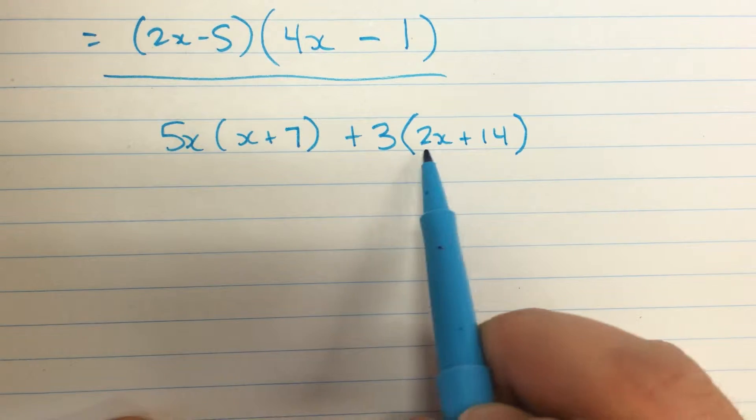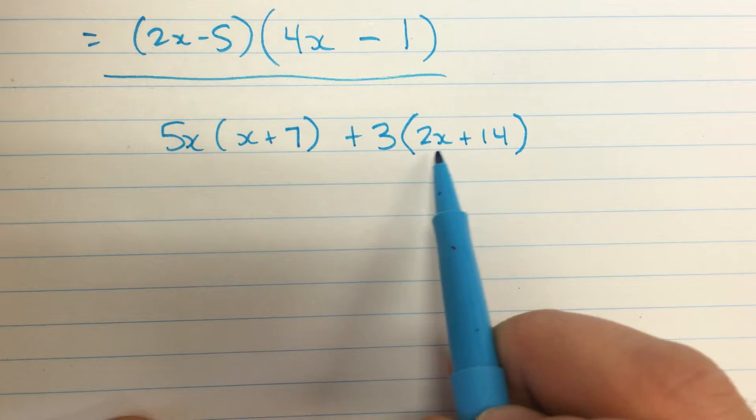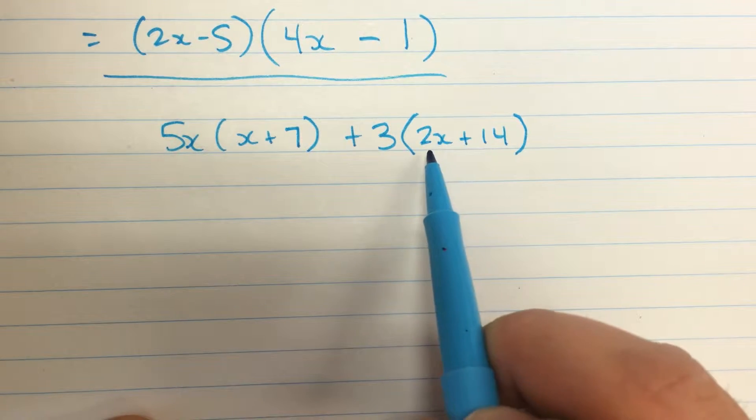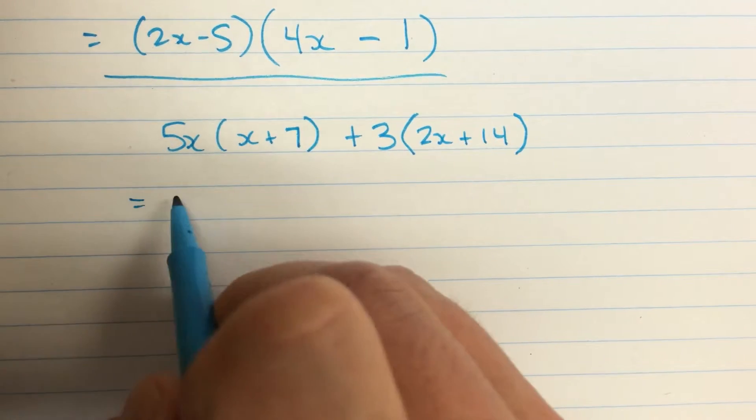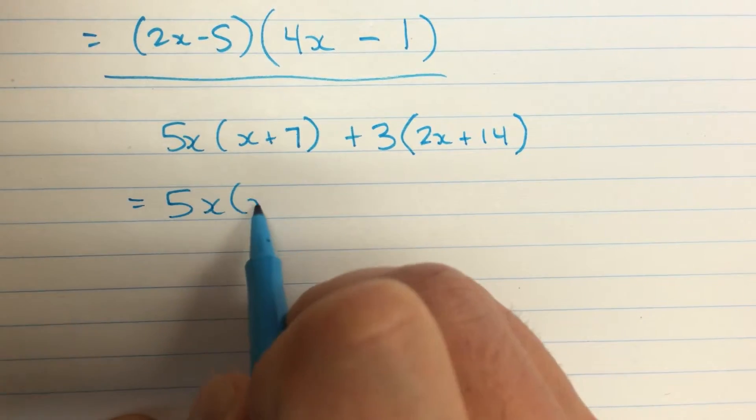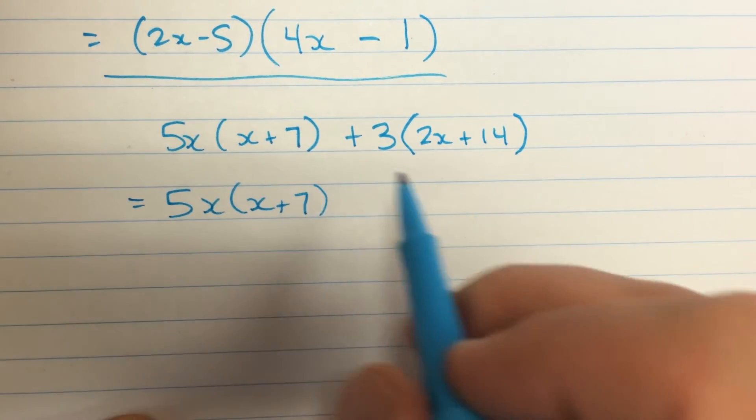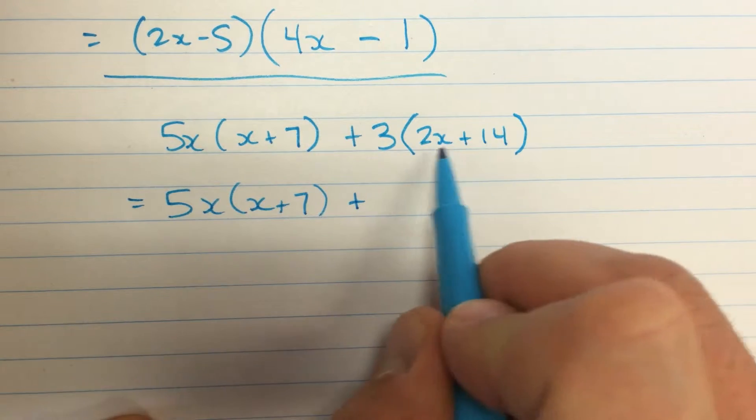But I notice that this one, this expression here, has a common factor between these two little terms here of 2. And so I'm going to rewrite this whole expression. The first part I'll leave the same. But the second part, I'm going to factor a 2 out of each of these.